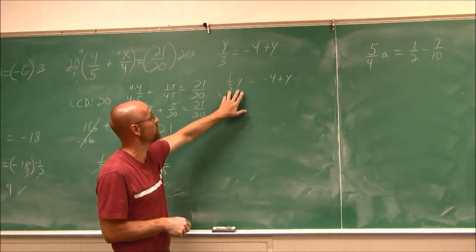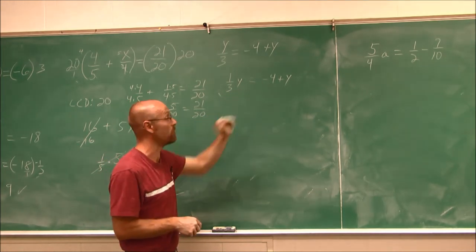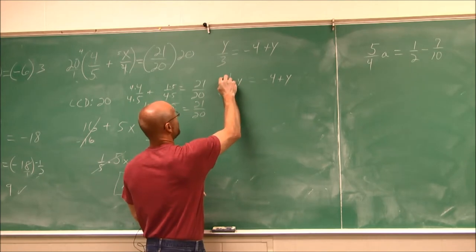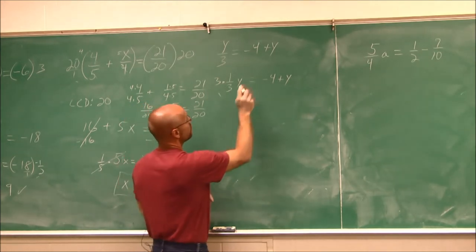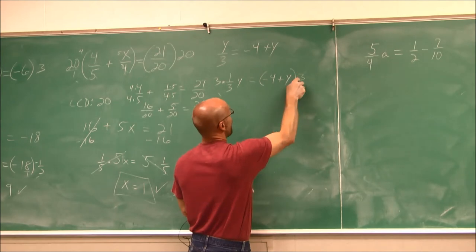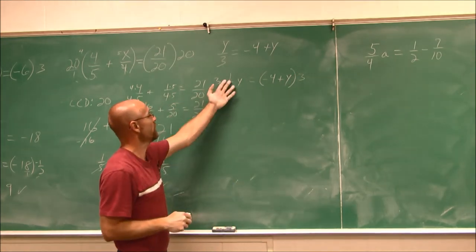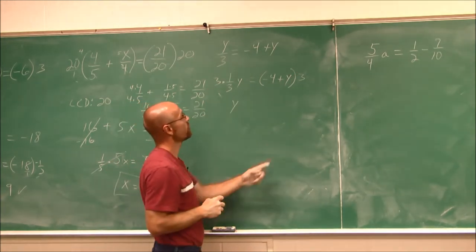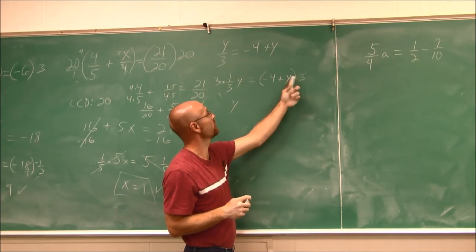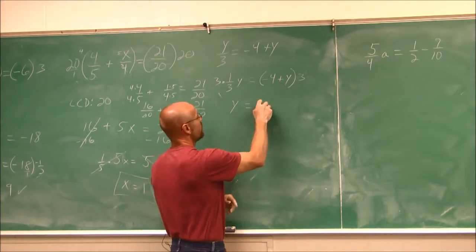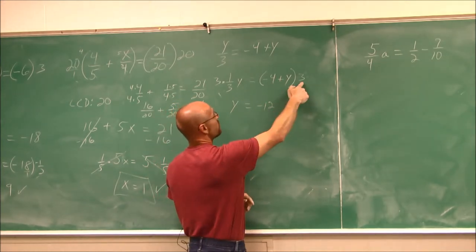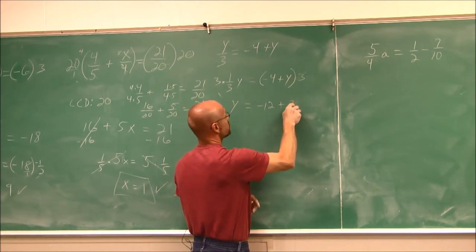To eliminate a fraction, and there's only one of them, I multiply by the LCD. And in this case, because there's only one fraction, it's 3. What I do to one side, I have to do to the other. 3 times 1 third is just y. And then here, I have to distribute it. 3 times negative 4 is negative 12. 3 times y is 3y.